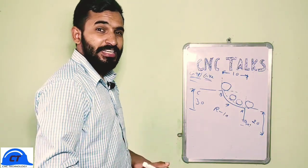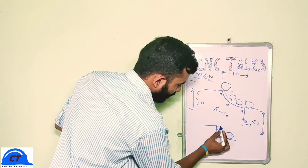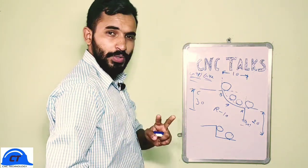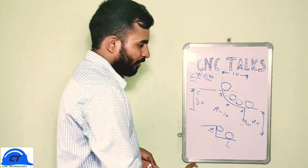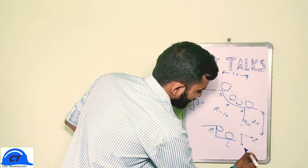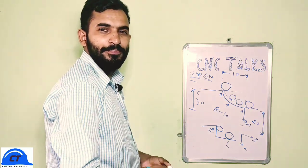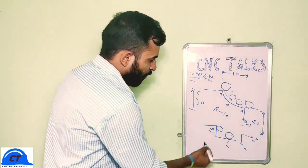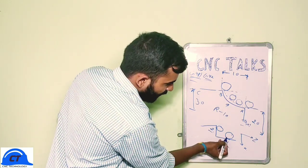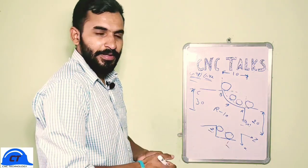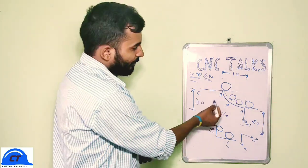When cutting straight edges, the tool moves in one direction and there are only two cutting points. When we take offsets along the Z axis and X axis from these two points, the coordinates are already calculated — that is why we do not give compensation on straight edges. But on curved or tapered edges, the cutting point changes continuously, and that is why we need to give compensation during tapered or curved surfaces.